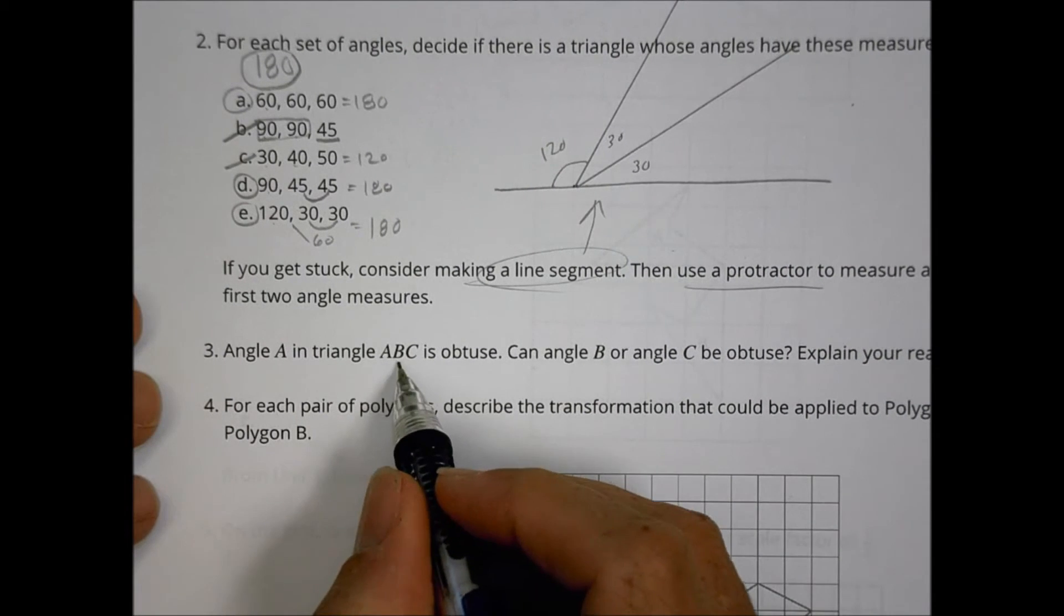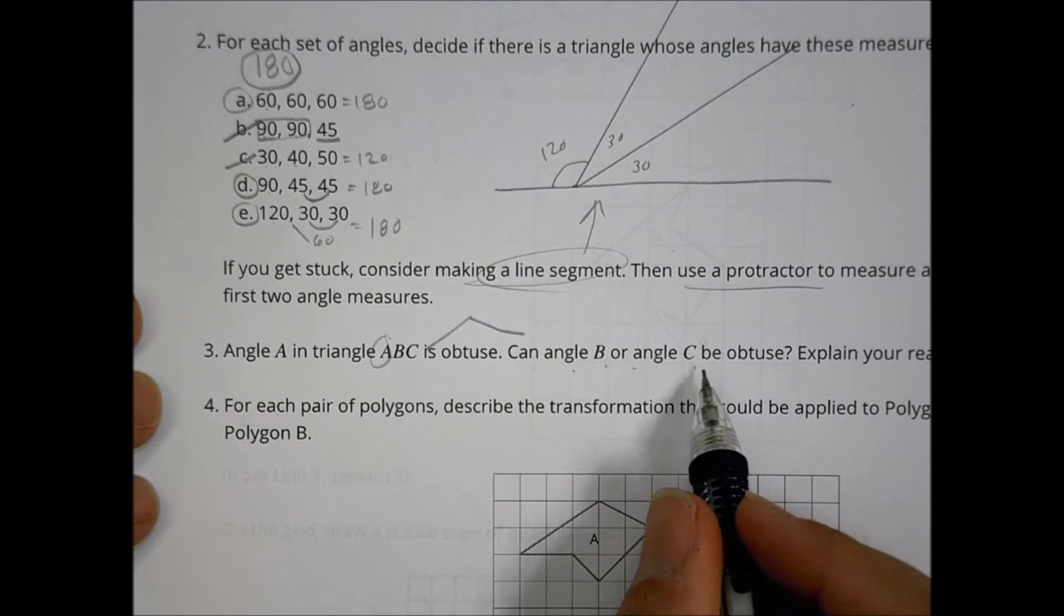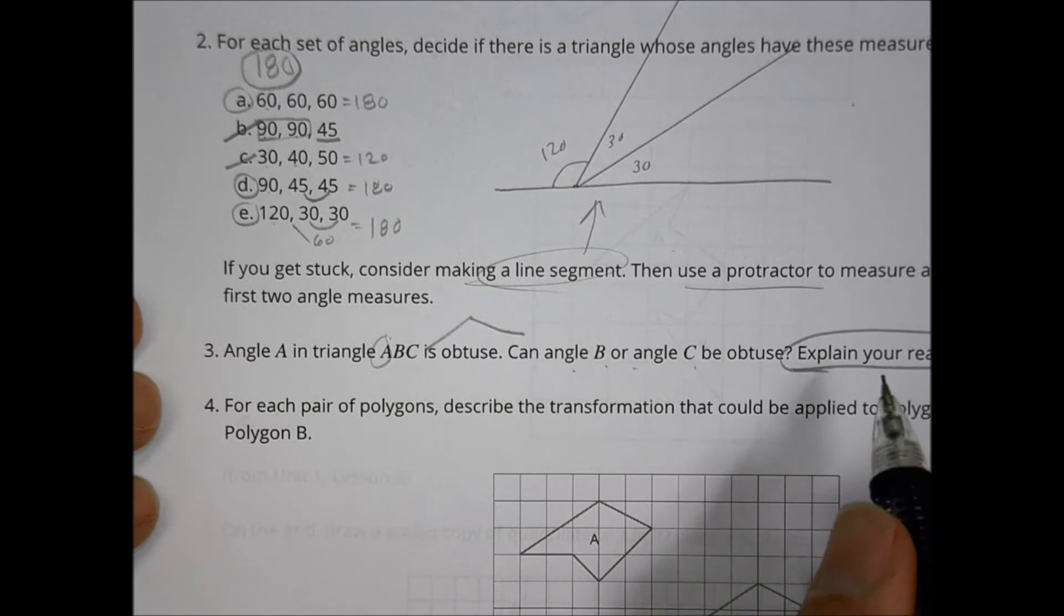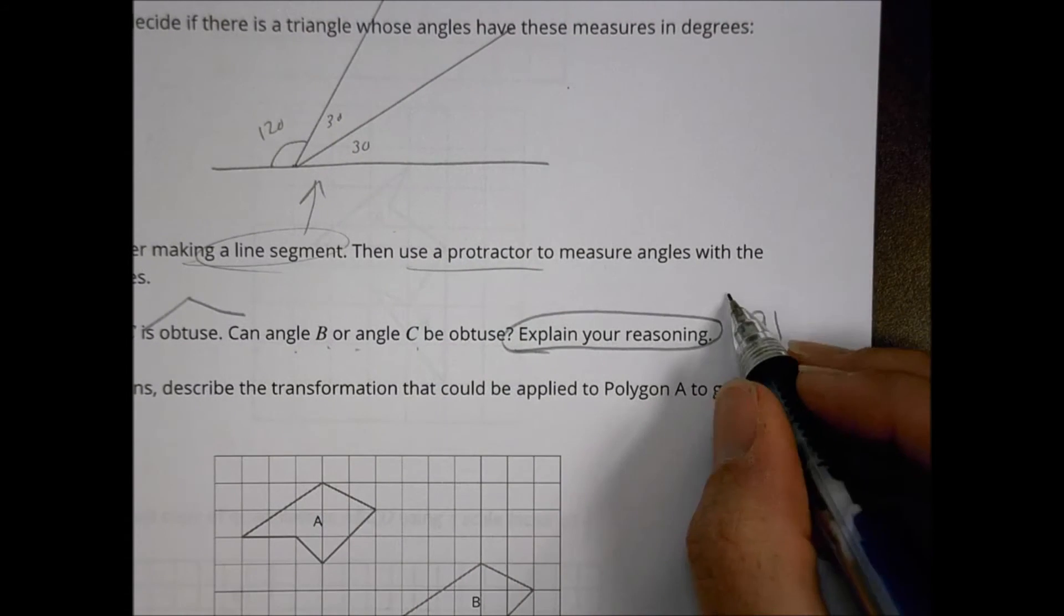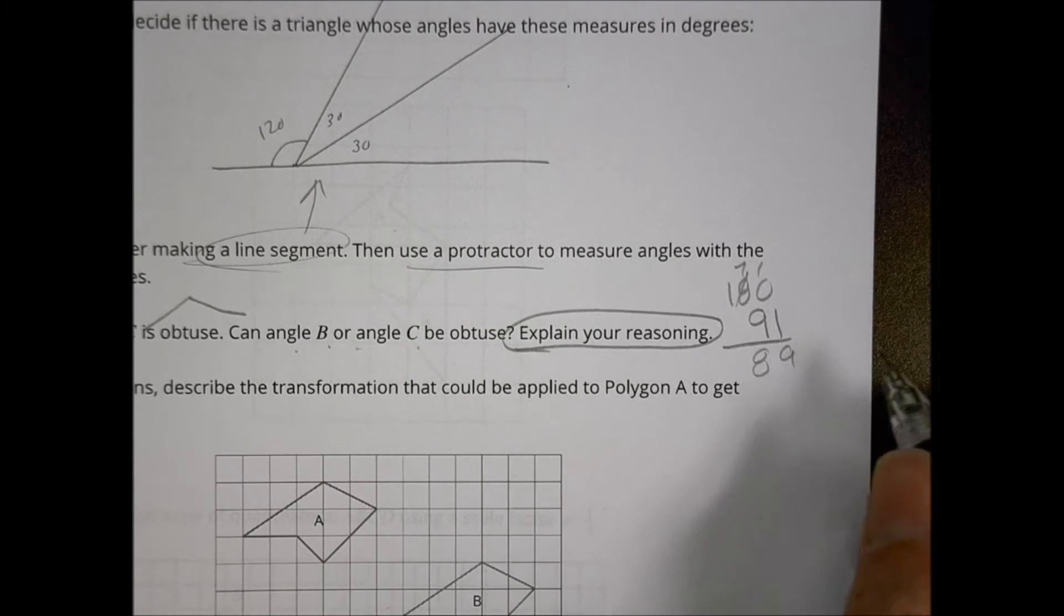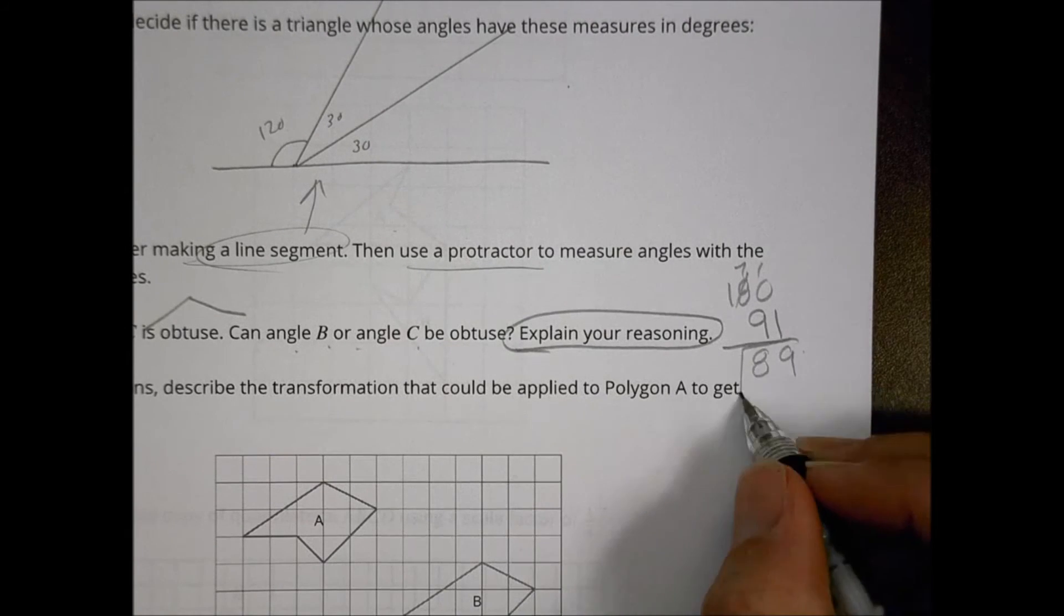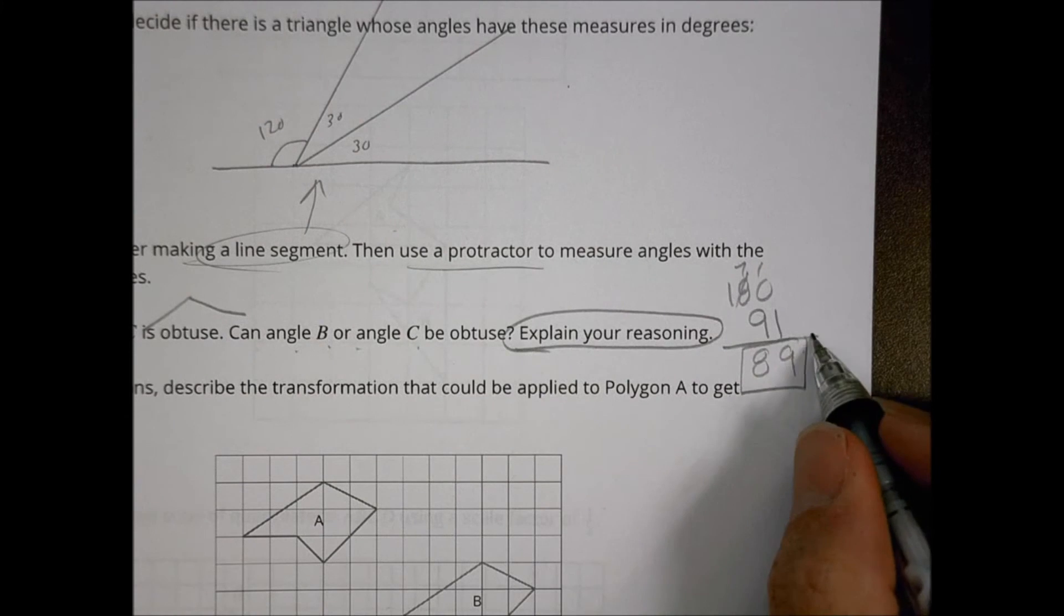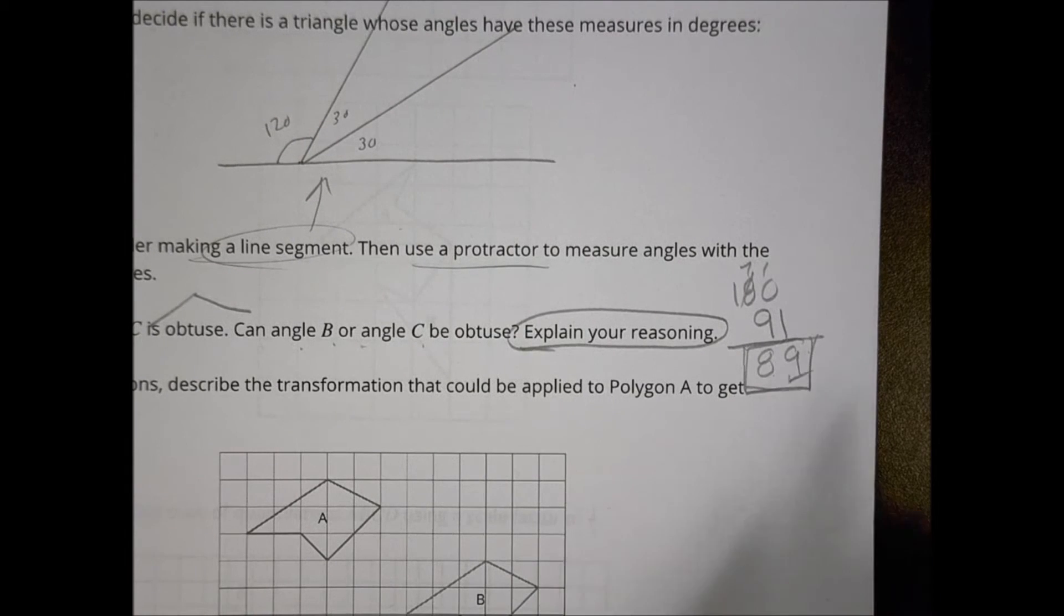Number three: Angle A in triangle ABC is obtuse. So that means it's going to be big, right? Can angle B or C be obtuse? You have to explain your reasoning here. If you have one that's obtuse, obtuse means more than 90, right? So let's say it was 91. Let's pretend it was 91 degrees. Well, what's left for my other two angle measurements? I'd have a total of 89 degrees left for two measurements. I have to get two more angles in there, right? Well, if obtuse means greater than 91, I don't even have 91 to work with. So there's no way I could create two angles and have one of those be 91 when I don't even have 91 to play with. You explain your reasoning in your own words and write that out.